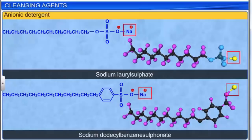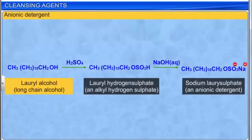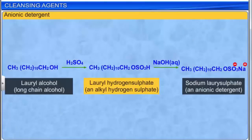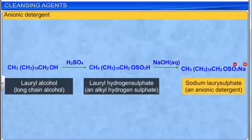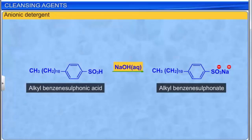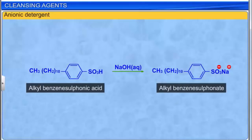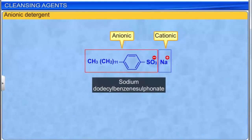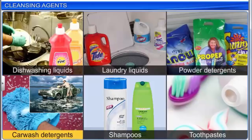Anionic detergents are sodium salts of sulfonated long-chain alcohols or hydrocarbons. Treating long-chain alcohols with concentrated sulfuric acid yields alkyl hydrogen sulfate, and neutralizing this with an alkali gives an anionic detergent. Similarly, alkyl benzene sulfonic acids, on being neutralized with an alkali, yield alkyl benzene sulfonates. In an anionic synthetic detergent, the anionic part of the molecule does the cleansing action. Anionic detergents are used extensively as dish-washing liquids, laundry liquids and powder detergents, car wash detergents, shampoos, and toothpastes.